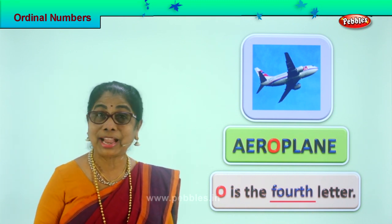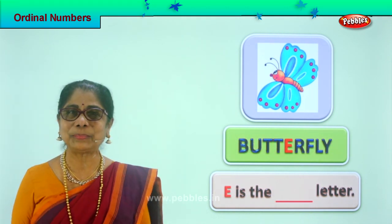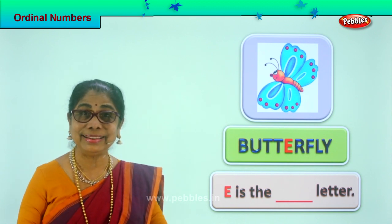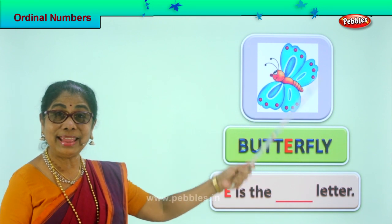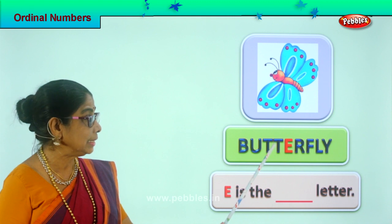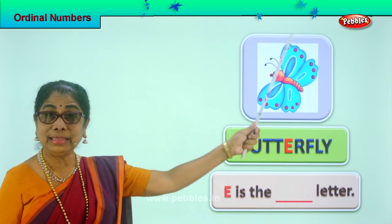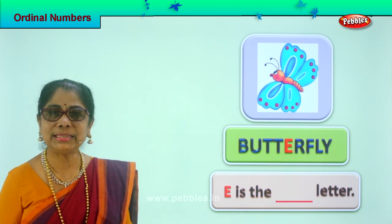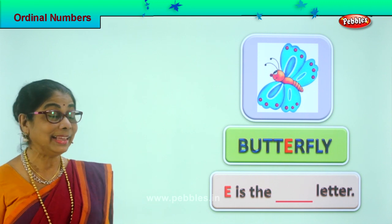Shall we go to another picture? Are you enjoying it? Good. Look what you have — have you seen this? Where do you see this? In the garden, yes. There are flowers, butterflies. Spell butterfly: B-U-T-T-E-R-F-L-Y. Here is the butterfly, here is the spelling. Which letter is colored? Red letter E.